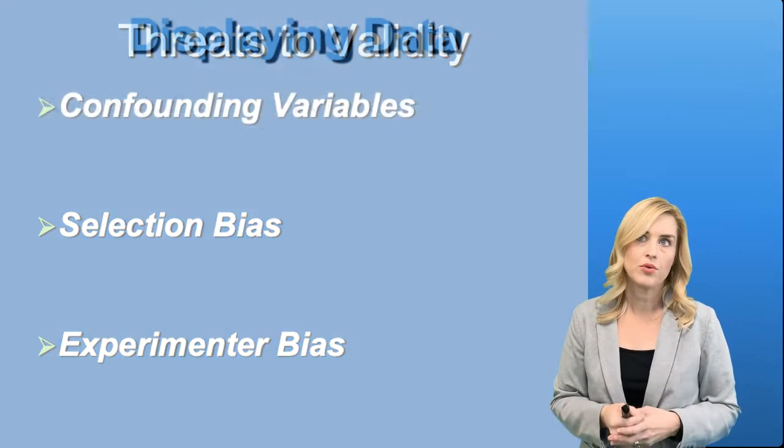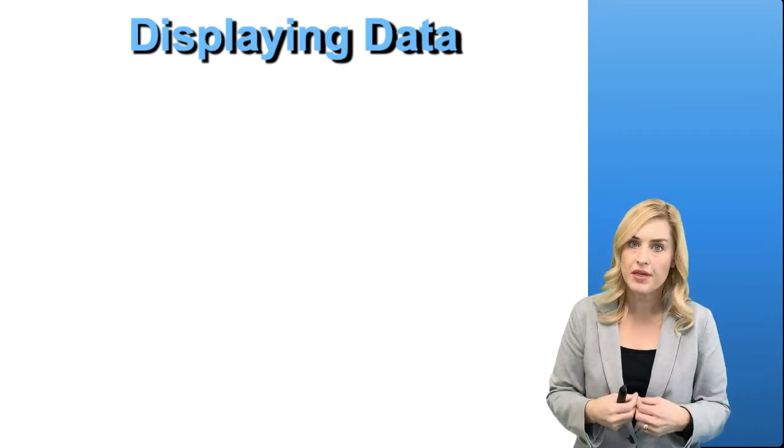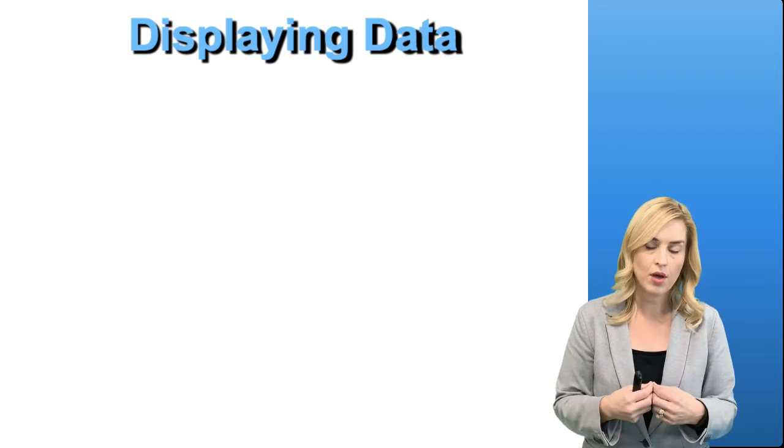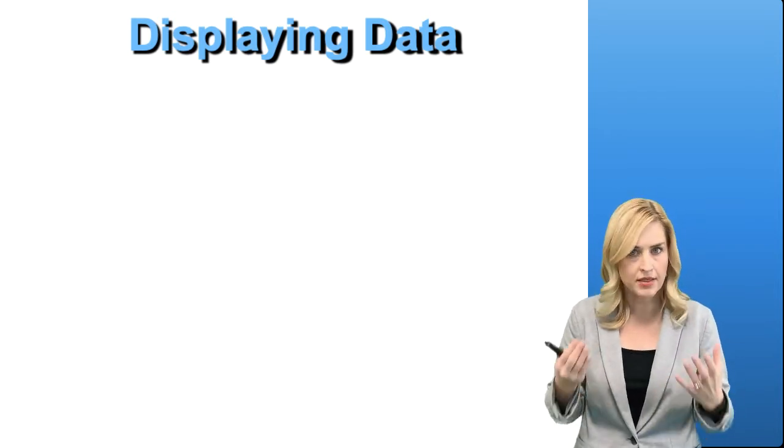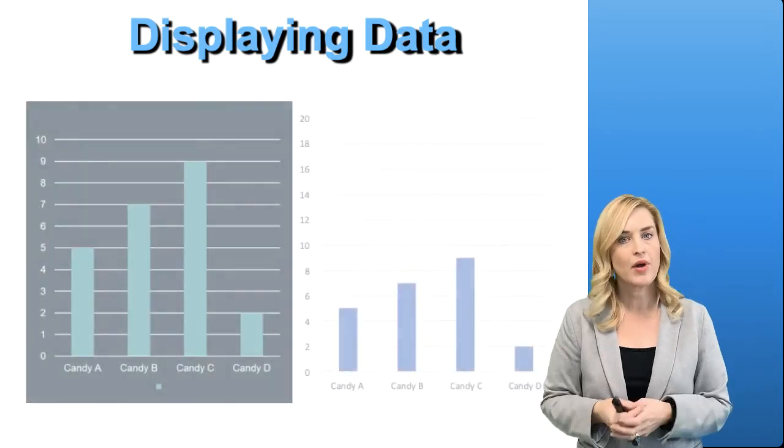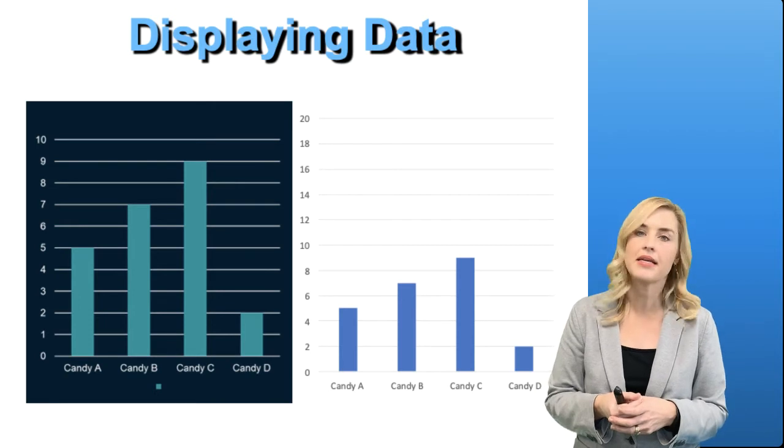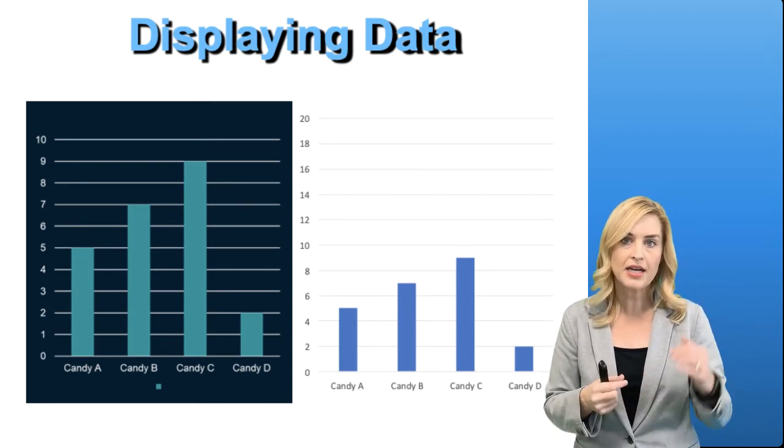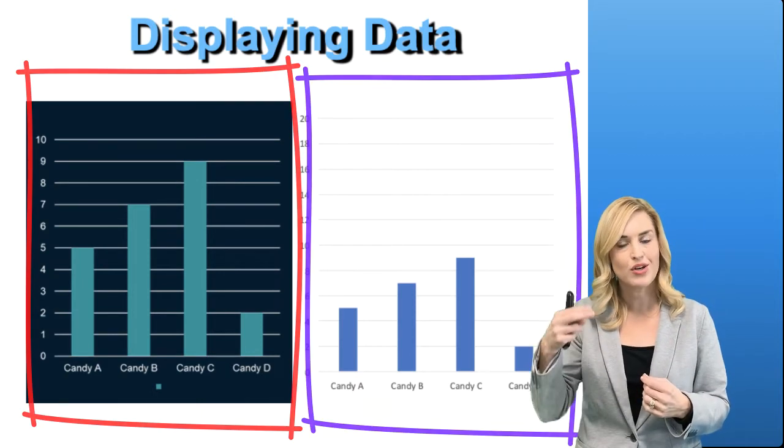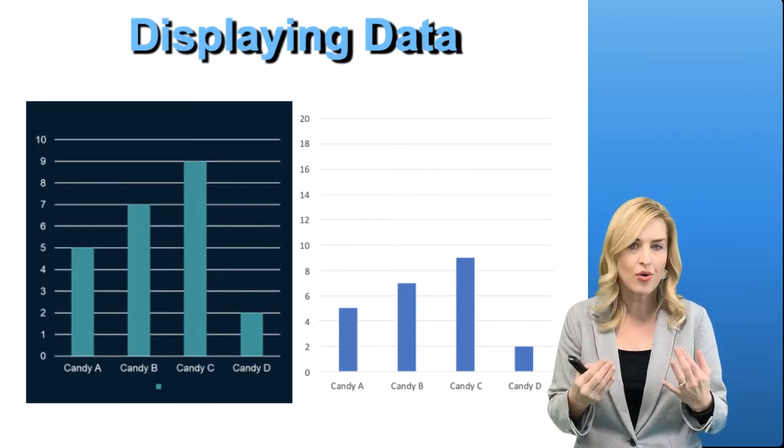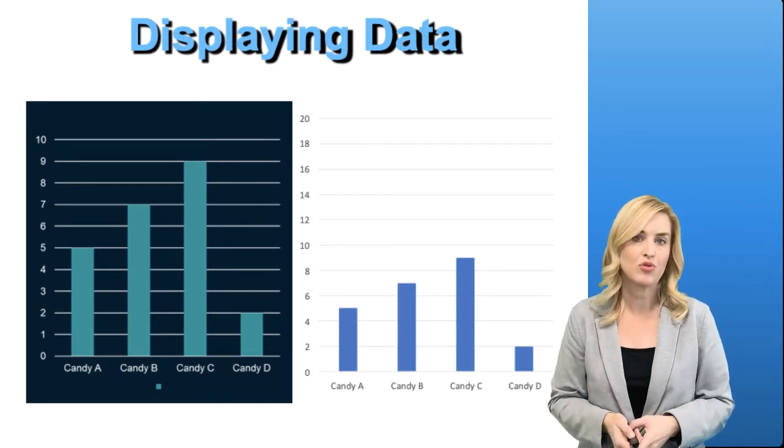The other thing that we need to be aware of is when we are actually displaying our data. This goes back to that critical thinking element that I was talking about in the last video. When we are consuming information and consuming research, we have to really look at what is being presented to me. You see these two graphs in front of you. What is the difference? There really isn't any difference in the data that is being presented to you. It is actually the scale that you see. One is zero to ten. The other is zero to twenty. That is important to know—what am I looking at and what message might the author or the advertiser be trying to tell me.